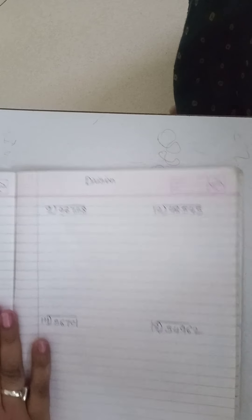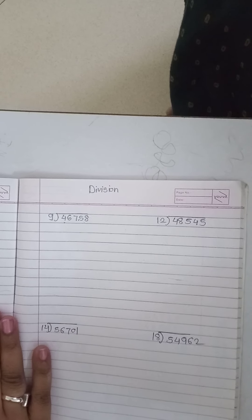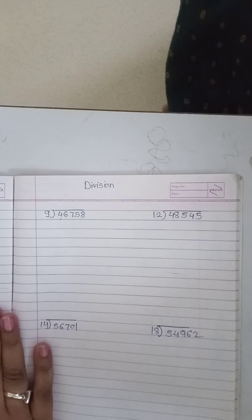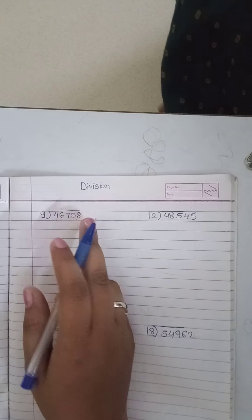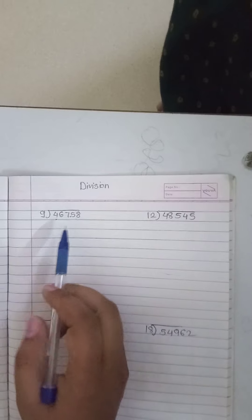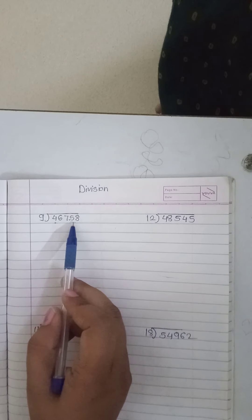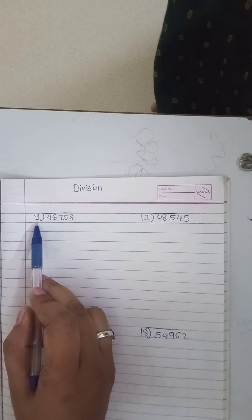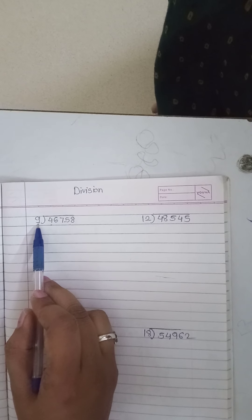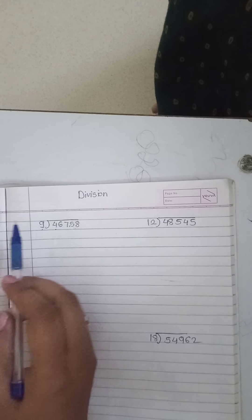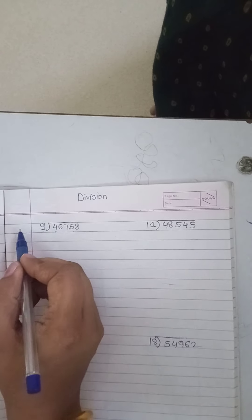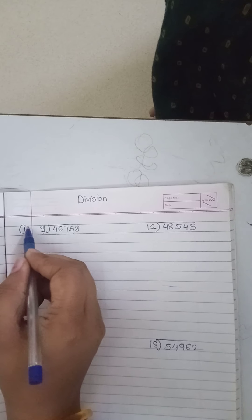Good morning students. Today we are going to learn division — a 5-digit number divided by a 1-digit number. We have to see the first example of division.